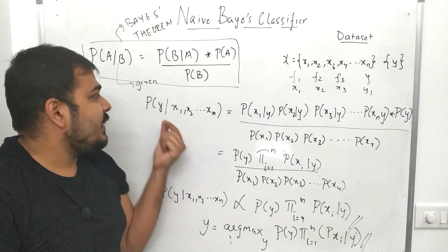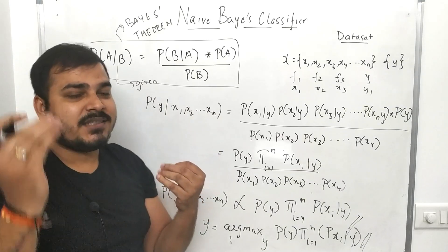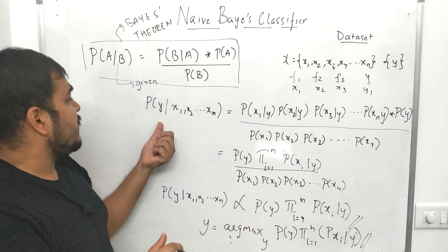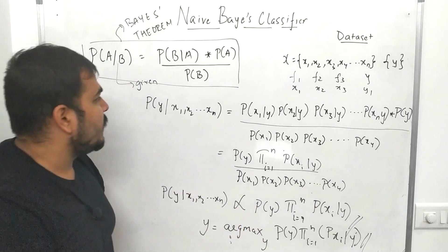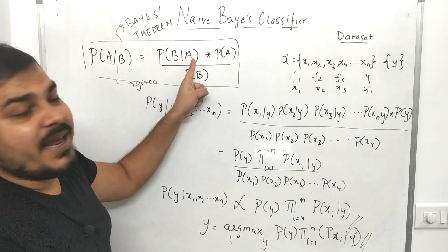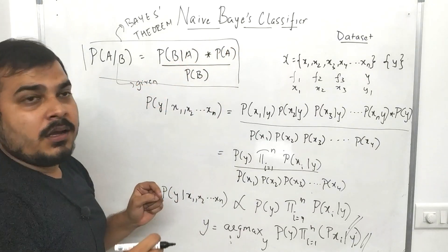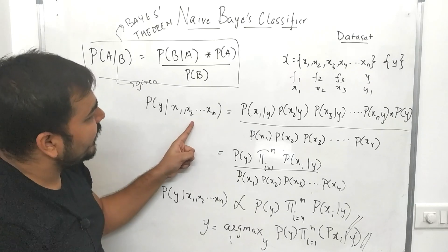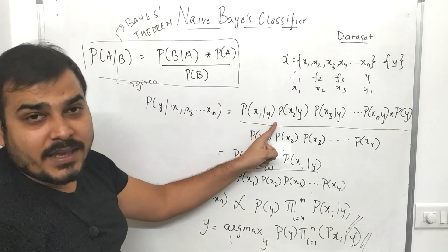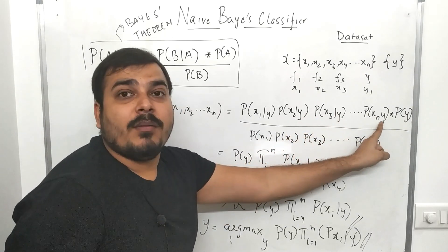The probability of y is a classification problem — it may be yes or no, or multi-class. Right now let me consider a binary classification problem. After doing this I will equate this particular equation. Probability of B given A — in order to compute this we are dependent on several values. B here is x1, x2 till xn. So I can write probability of B as: probability of x1 given y, multiplied by probability of x2 given y, multiplied by probability of x3 given y, and so on up to probability of xn given y.